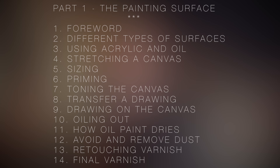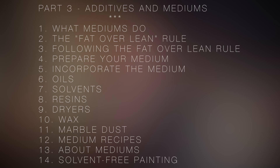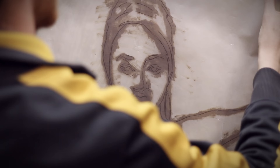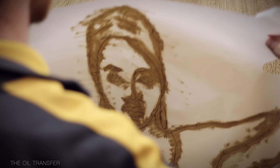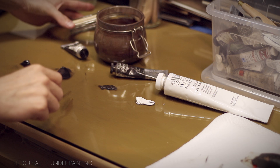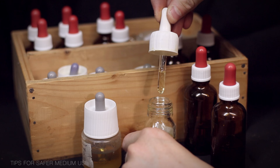The first part is about the painting surface. The second part covers paint and color. The third part talks about additives and mediums, and the fourth is about brushes and brushwork. Each part reviews in great detail all the different options you may have before, during, and after painting. It also gives you plenty of tips and tricks that can really prove to be beneficial in the long run.